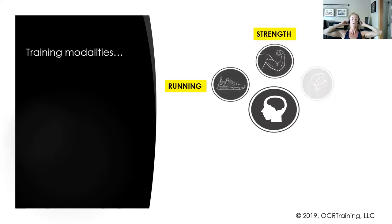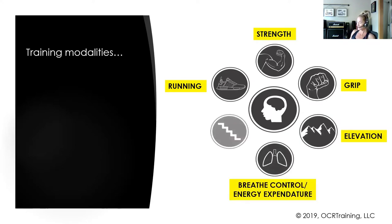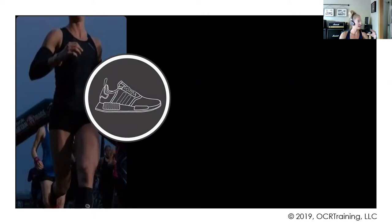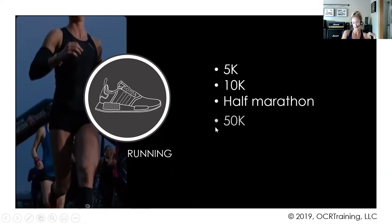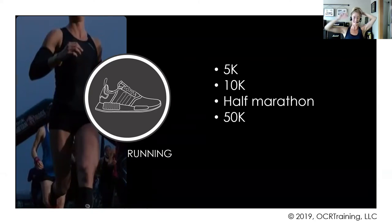Let's dive into the training modalities for OCR. We've got running, strength elements, grip, elevation, breath control and energy expenditure, and terrain. For running, OCR distances range from 5K, 10K, half marathon, 50K, to one-mile sprint courses. Training for the running piece includes interval training and fartlek-style intervals to increase speed, and you also need to take into consideration the linear progression in distance you'll be covering in races.